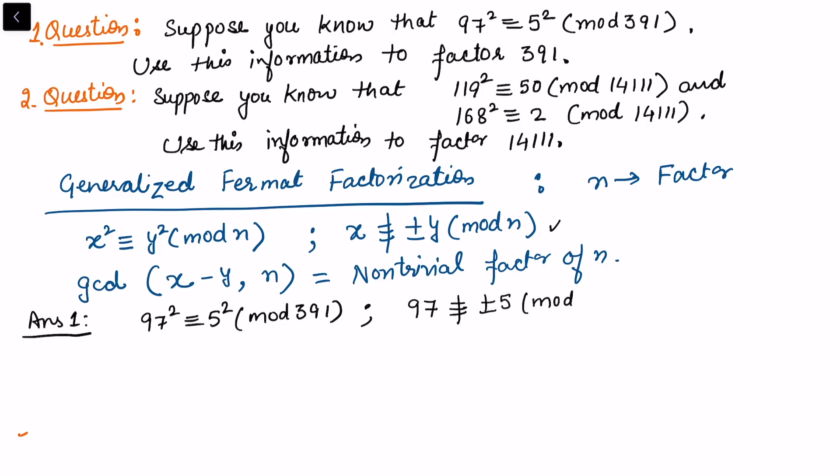We can see further that 97 + 5 = 102, which is not divisible by 391, and 97 - 5 = 92, which is also not divisible by 391. So both conditions are satisfied. Therefore, gcd(97 - 5, 391) = 23. So 391 = 23 × 17.